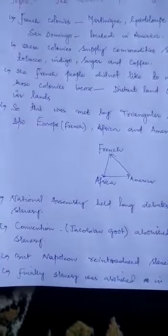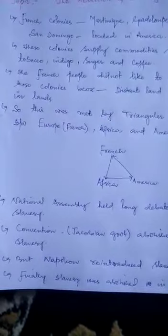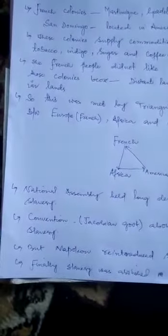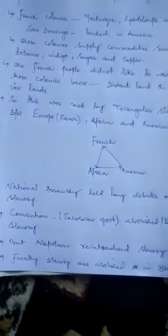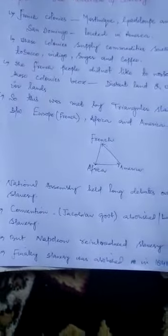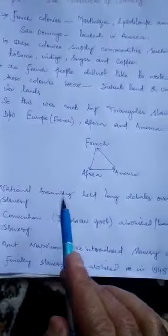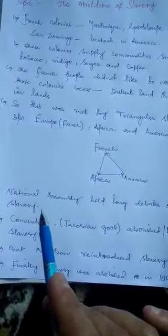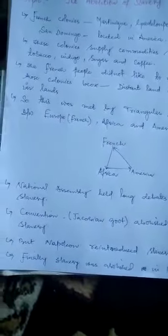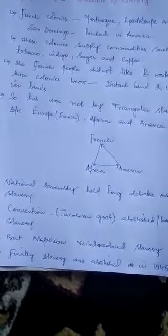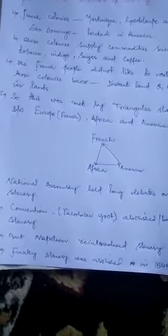جیسے ہم دیکھیں گے کہ National Assembly بنی، پھر Convention بنی، پھر Directory بنی، پھر Napoleon آیا. اب ہم دیکھیں گے کہ جو National Assembly پہلے بنی، National Assembly نے slave trade کے اوپر بات کیوں نہیں کی، انہوں نے slavery کو abolish کیوں نہیں کیا. National Assembly held long debates and discussions over slavery, but National Assembly did not fully abolish slavery.